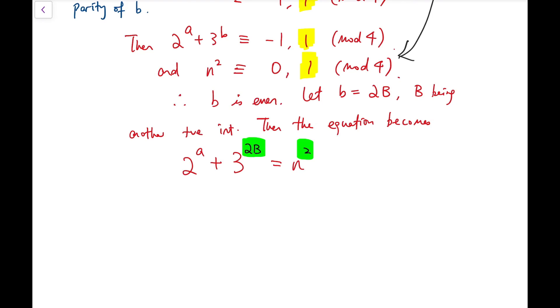Because two of the powers, the exponents, are even. So that means we have two squares. And I can move them to one side, and that gives us difference of squares.